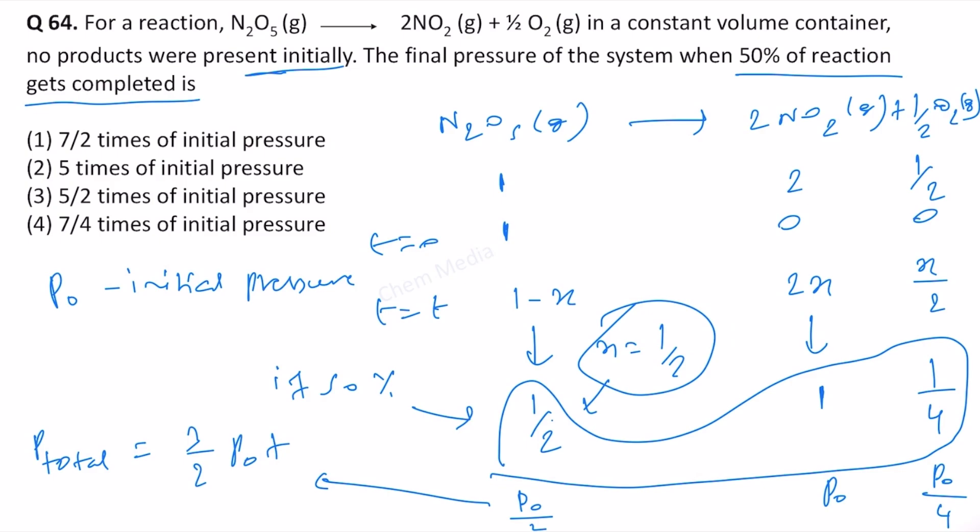But if you want to express it in terms of fractions, then take 4 as common. Then it will be 6 P₀ plus P₀, so therefore 7/4 P₀. So this means option 4 is correct.